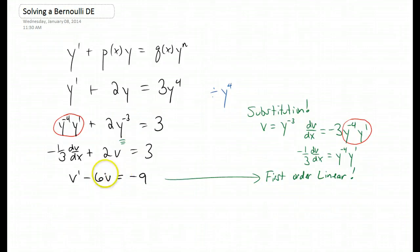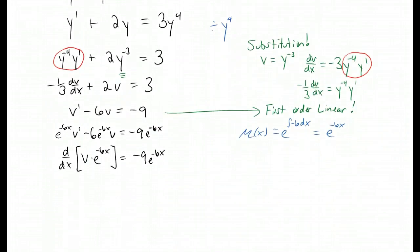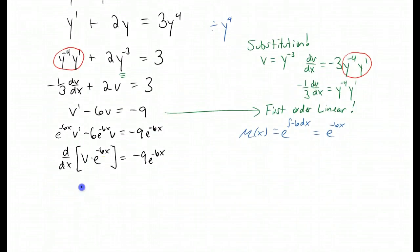Fortunately at this point we know how to solve first order linear differential equations. We use the integrating factor. That's going to give us an integrating factor of e to the negative 6x. We're going to multiply this integrating factor through the entire differential equation. The left hand side of the equation becomes a product rule. We integrate both sides. And we simplify and solve for our dependent variable which now after our substitution is v.